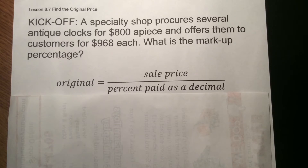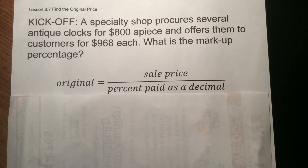Starting off with kickoff there. That's just building from the last time where we were finding the percent of either the markup or the discount. What we did before that was finding what the sales price is and all that. The last part of this is just finding the original price. So now we're going to work backwards. We're going to have what our sale price was, we know what our percent was, and now we're going to find that original.